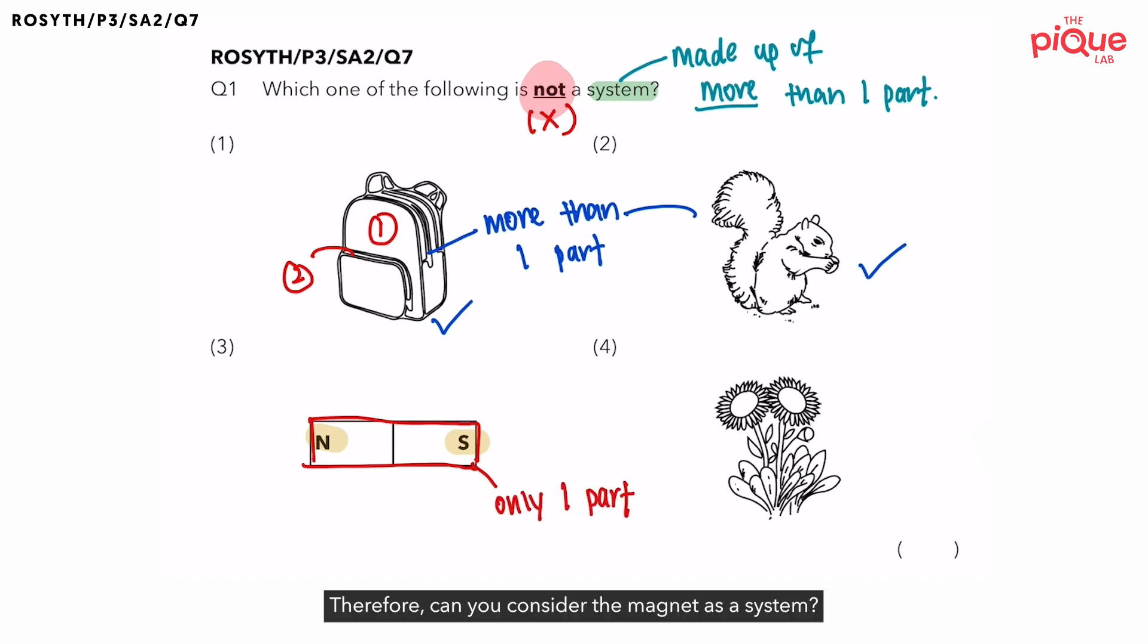Therefore, can you consider magnet as a system? No, you can't. Hence, I will put the cross for the magnet. Okay, with that, let's move on to the last option.